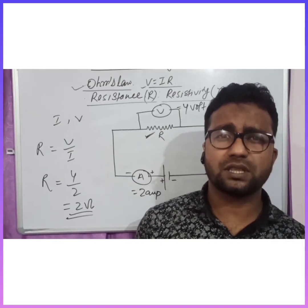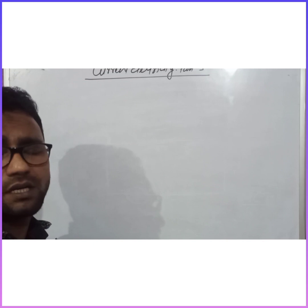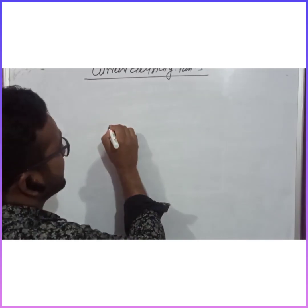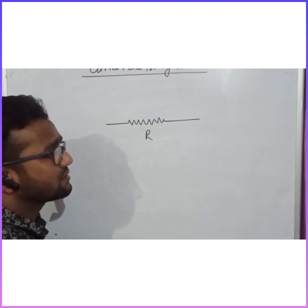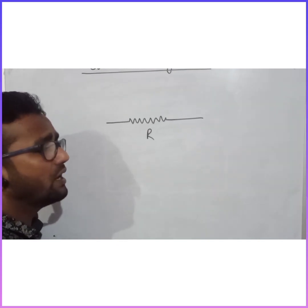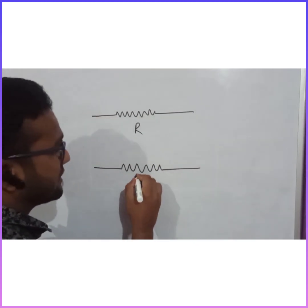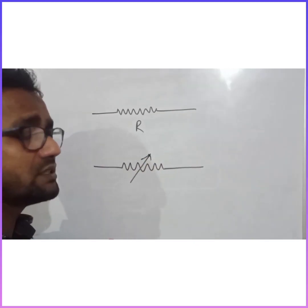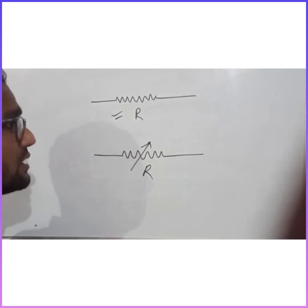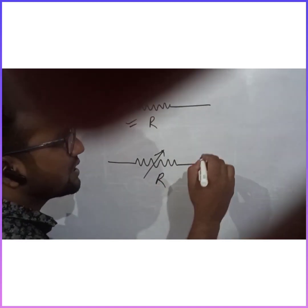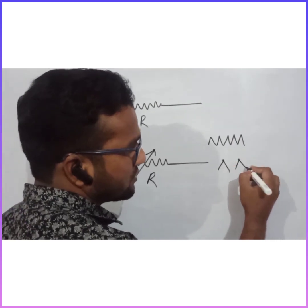Now I will discuss the notation or representation of resistance. We can draw it like this — this will represent resistance of a circuit or wire. This symbol also represents resistance, and this one indicates that resistance is variable. So this is a constant resistance and this is a variable resistance. These are the notation symbols for resistance.